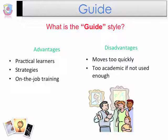Advantages from the guide style are for practical learners who like to link their training to real-life situations. It's a strong motivator for learners to take strategies from one activity and create many uses, even in on-the-job training. Disadvantages when overused include the rush to get to the learning point — a guide likes to move quickly, and learners may not understand everything on the way to the end point. Disadvantages when underused affect real-world learners, because they find learning too academic and less attractive, resulting in boredom.